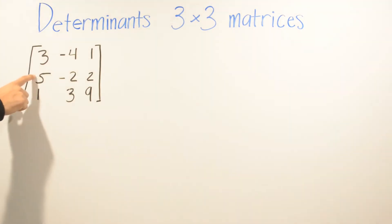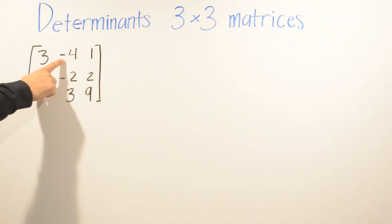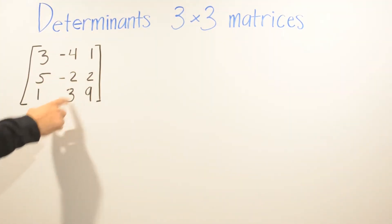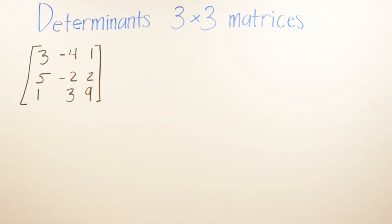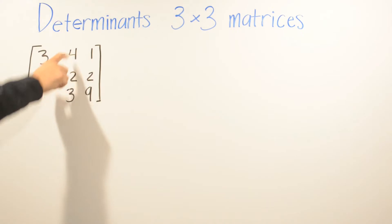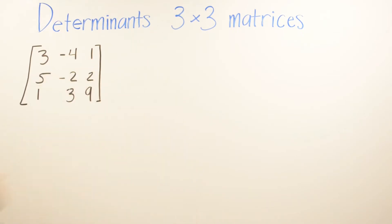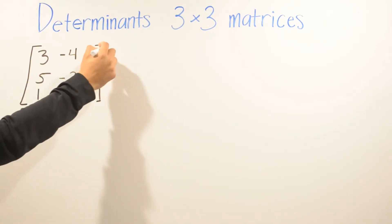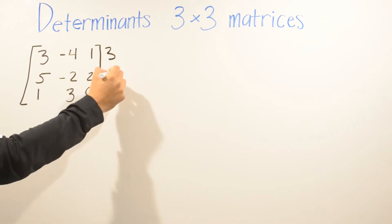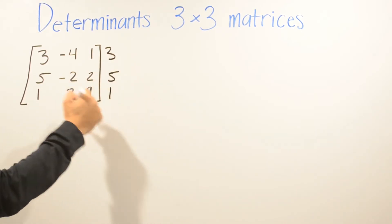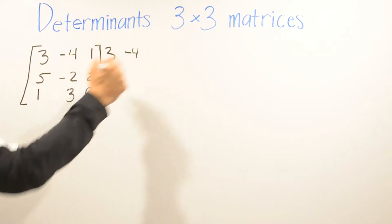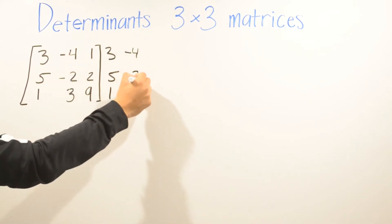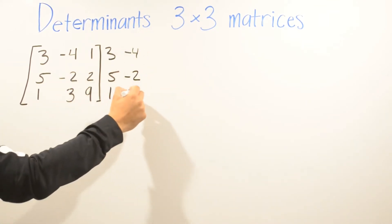In this example, we're using the matrix 3, 5, 1, negative 4, negative 2, 3, 1, 2, and 9. The first thing we need to do is copy the first two columns of the matrix and put them on the right side. So we're going to copy and put 3, 5, 1, negative 4, negative 2, and 3 outside the matrix.